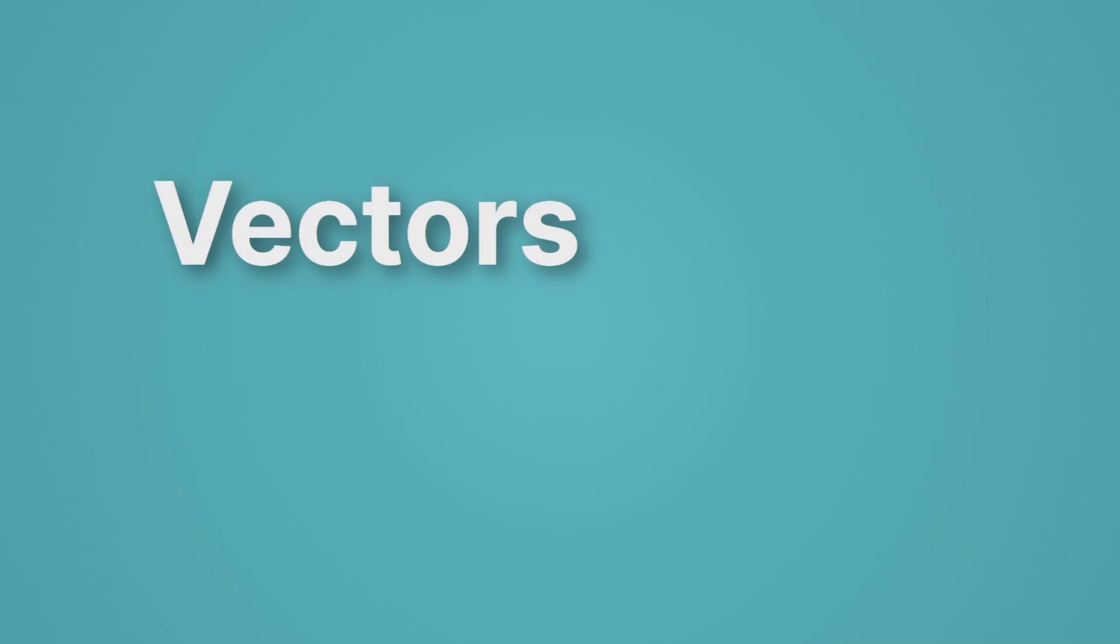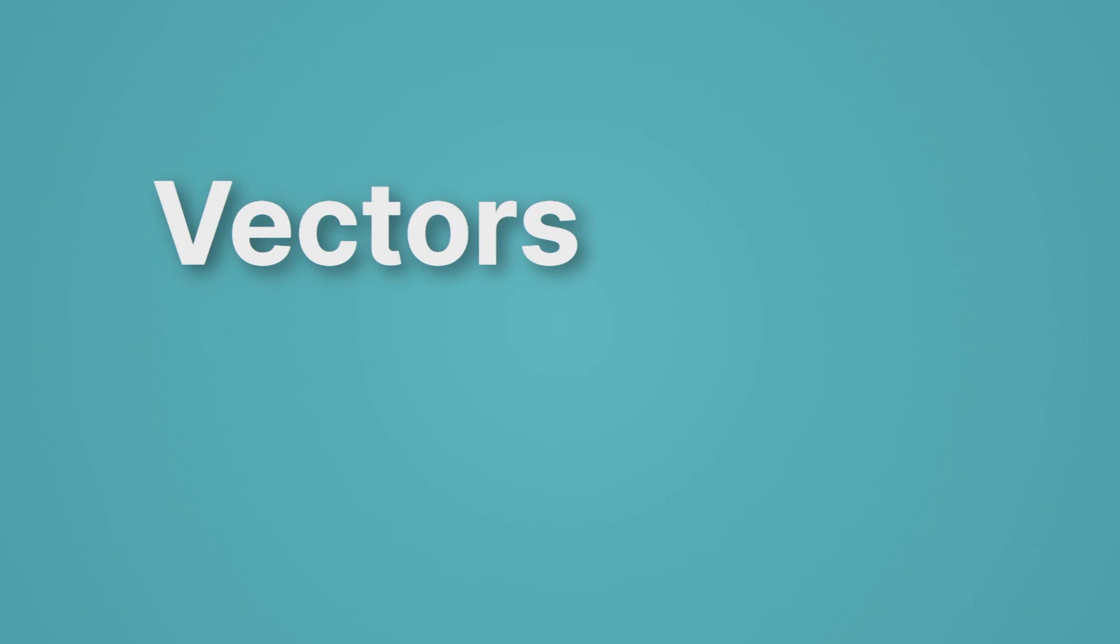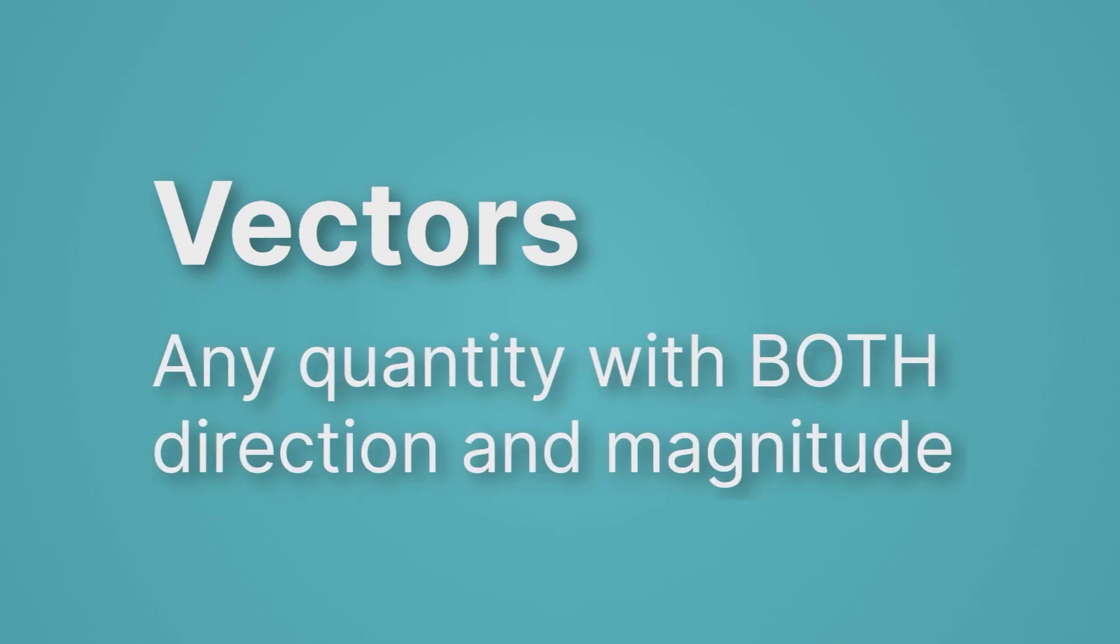Let's now talk about vectors. What in the world is a vector? Well, a vector is any quantity with both direction and magnitude. It's any quantity with both direction and magnitude. So we take a scalar, any scalar, which is always going to have a number and a unit, and if we give it also a direction, suddenly it's a vector.